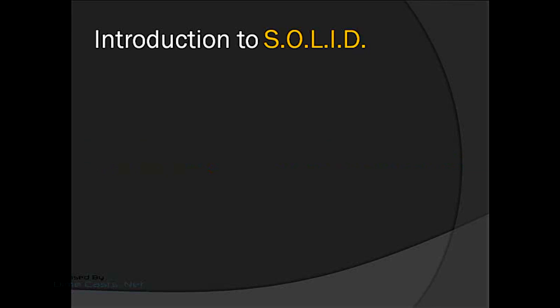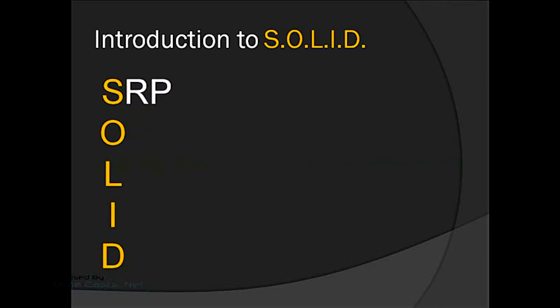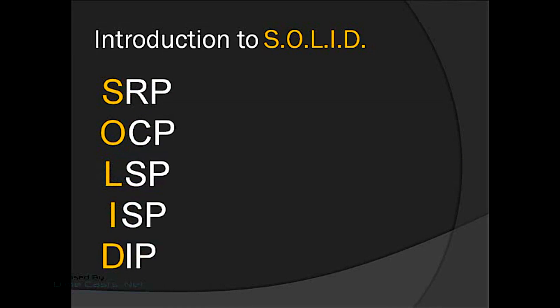To get started, let's examine the SOLID acronym in general. SOLID itself is actually an acronym of acronyms. The S is for the SRP, the O is for OCP, the L is for LSP, the I for ISP, and the D for DIP. Each one of these in turn is an acronym for an object-oriented design principle which we're going to examine in this series of screencasts.